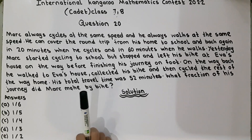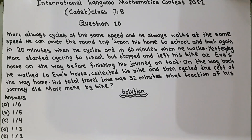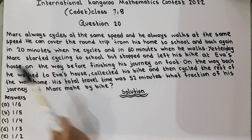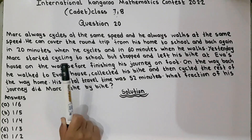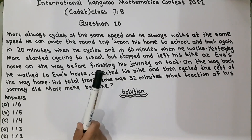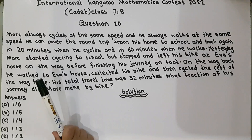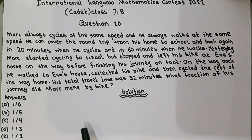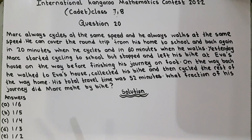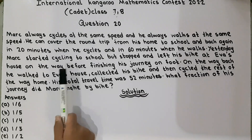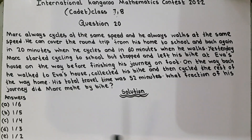What fraction of his journey did Mark make by bike? Mark always cycles at the same speed and he always walks at the same speed. He can cover the round trip from his home to school and back in 20 minutes when he is on a cycle.